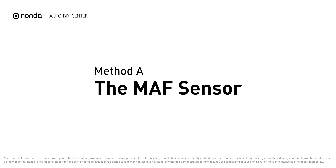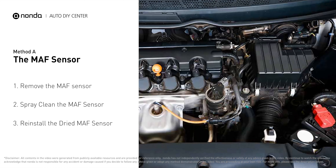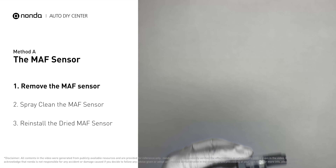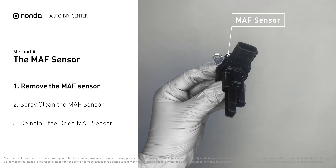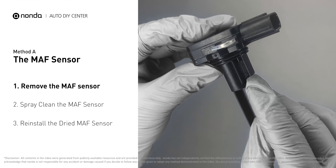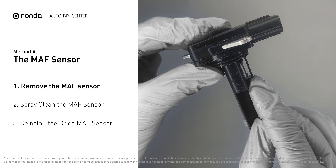Method A: MAF Sensor. MAF sensors are located between the air filter and the throttle body. Carefully remove the MAF sensor from your car and do a quick inspection around. The wire inside often gets dirty and needs to be cleaned.